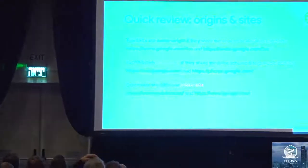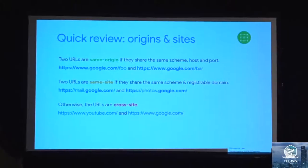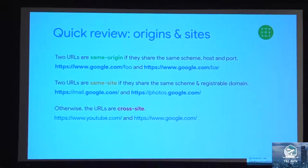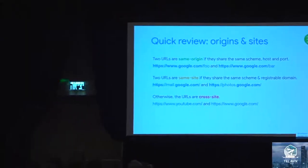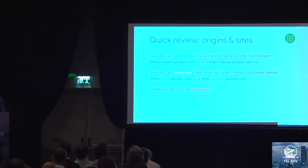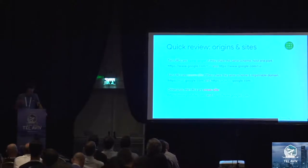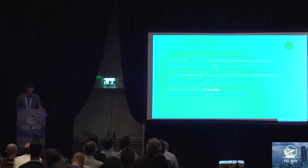Before we get into that, a super quick review on origins and sites. Same origin is basically the tuple of scheme, host, and port — whenever two URLs have the same values in this tuple, they're considered same origin. For example, www.google.com/foo is same origin to www.google.com/bar. Same site is similar but different: neighboring subdomains on the same registerable domain are considered same site. So mail.google.com and photos.google.com are same site but not same origin. Everything else is cross-site. This distinction is important because the browser enforces different isolation mechanisms based on it.